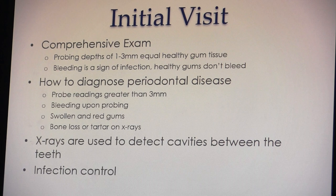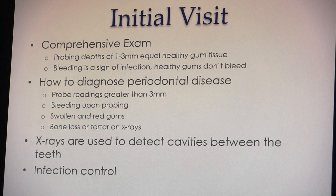At the initial visit we do a comprehensive exam including periodontal probing. The periodontal probe is used to measure the gingival sulcus — the space between the tissue and tooth. Probing depths of one to three millimeters are healthy, and bleeding is a sign of infection because healthy gums do not bleed. A probing depth of four millimeters is a warning sign, and five millimeters and above indicates diseased tissue.